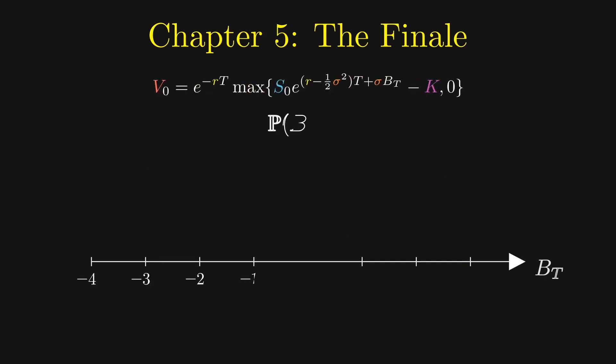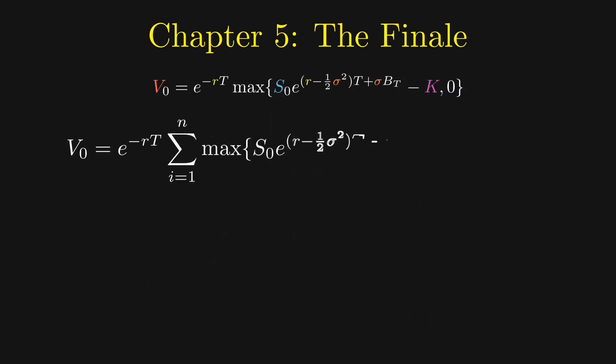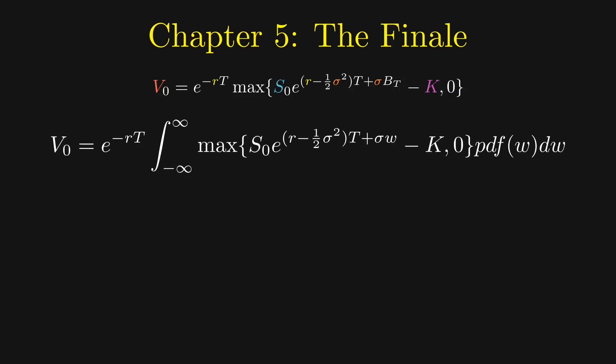The values of B_T are sampled randomly according to its distribution. If there are n possible values for B_T, we will sum over all the corresponding values for V_0, weighted by the probabilities of each value of B_T. However, B_T is a continuous random variable with infinitely many possible values. The expectation should be represented by an integral from negative infinity to infinity of the payoff under each possible value w of the B_T random variable, multiplied by the probability density function of B_T.